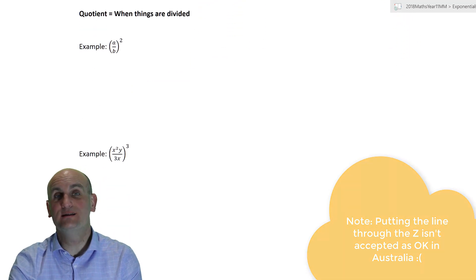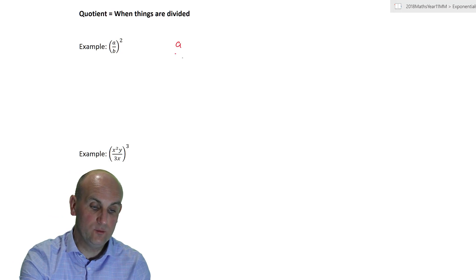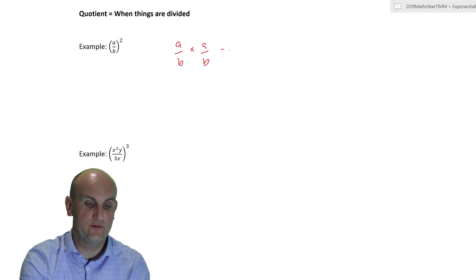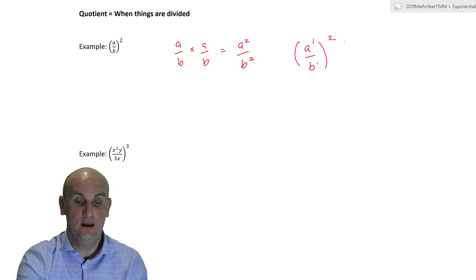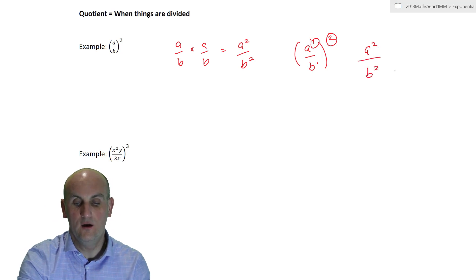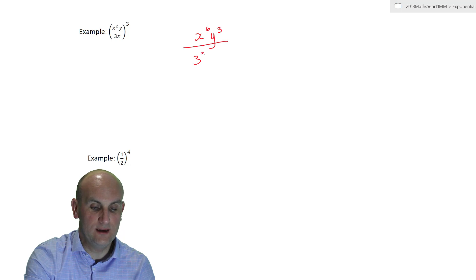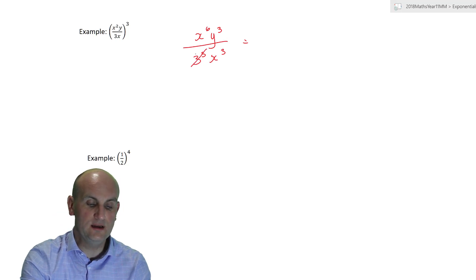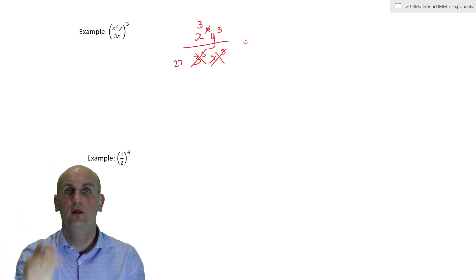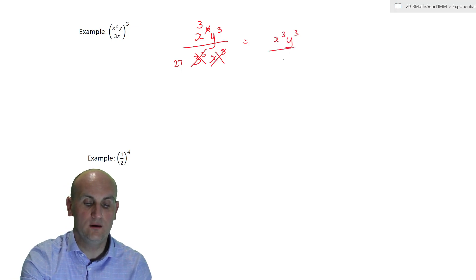The quotient rule works in exactly the same way when things are divided. Everything inside the brackets gets raised to the power, even with a divide sign. So (a over b) squared is a squared over b squared. For the example (x² y over 3x) all cubed: you get x to the power of six times y cubed divided by three cubed times x cubed. Three cubed is 27, and the x cubed on the bottom cancels with three of the six on top, leaving x cubed y cubed over 27.